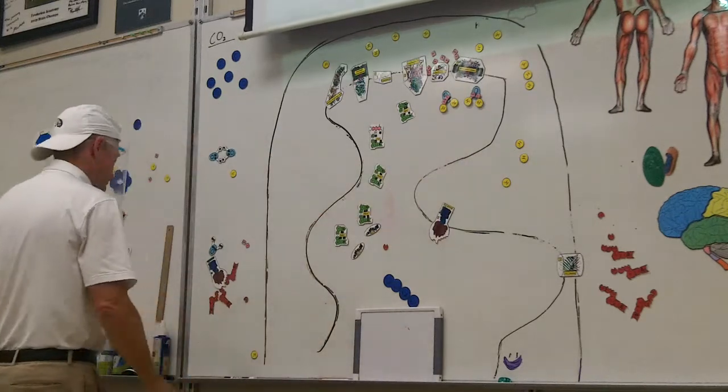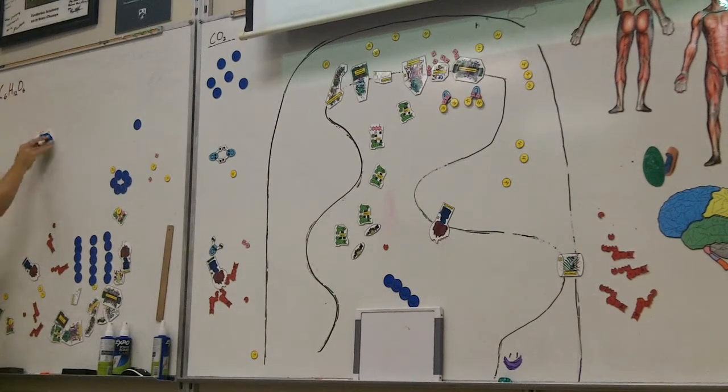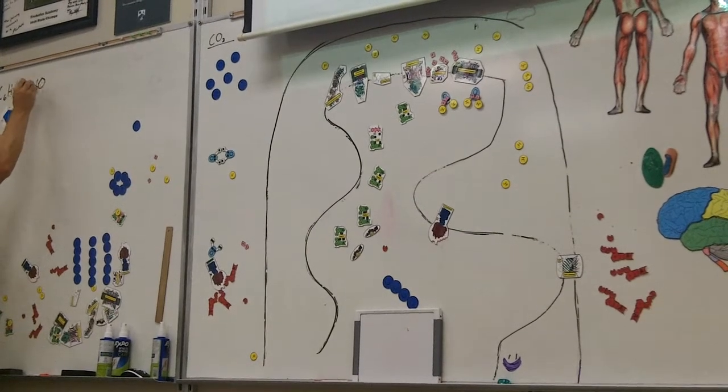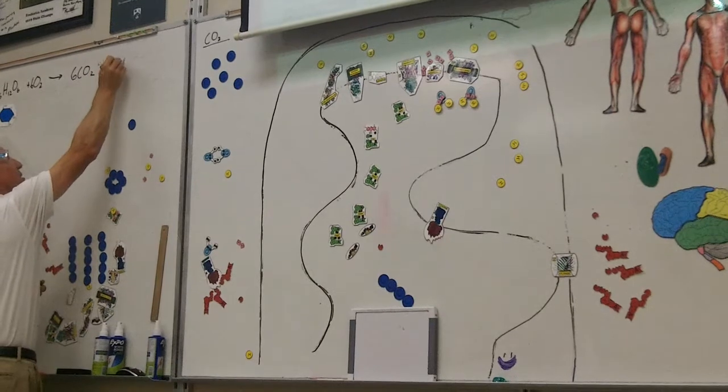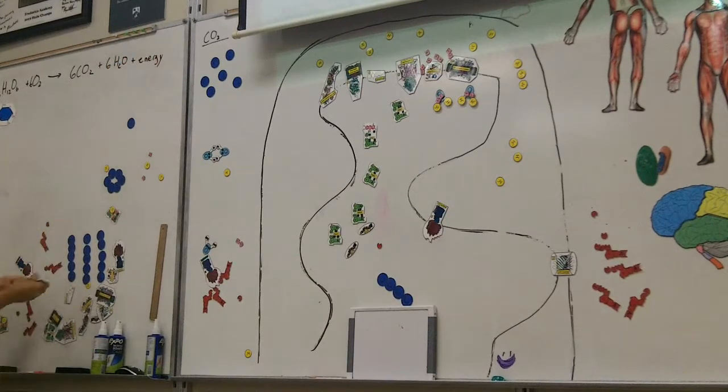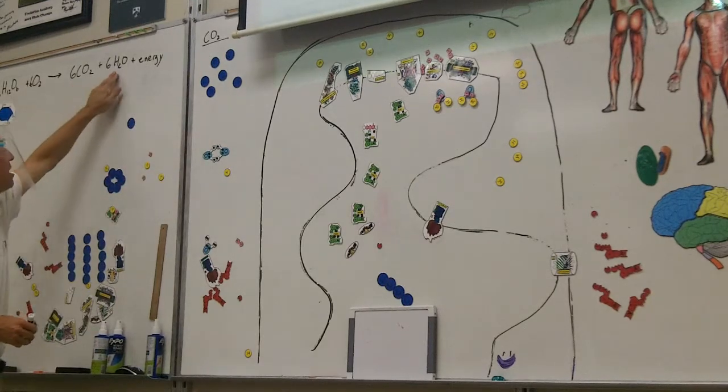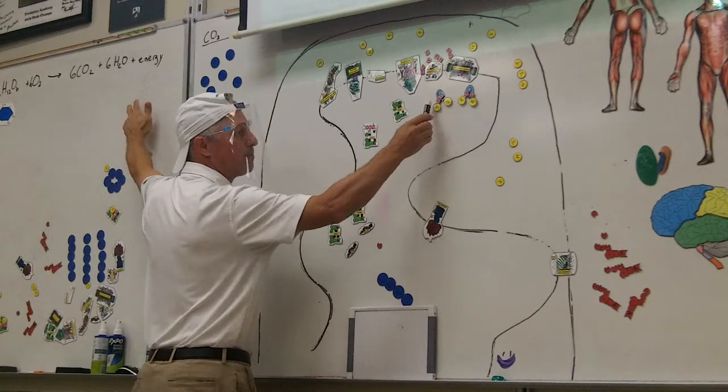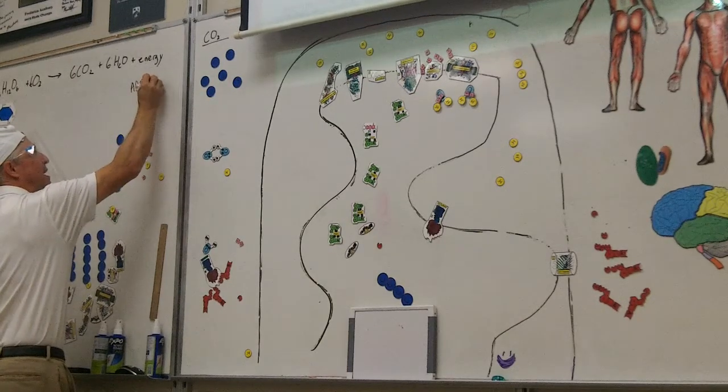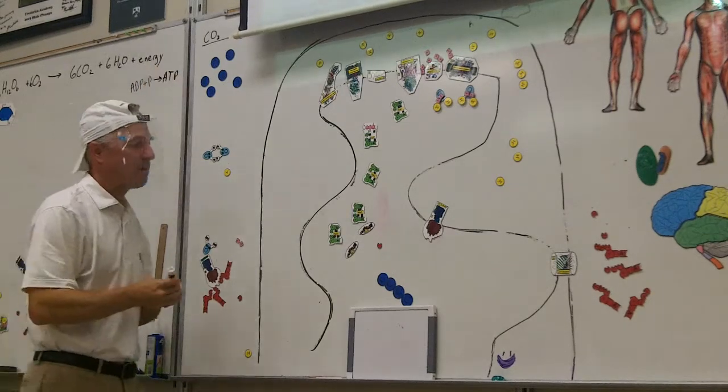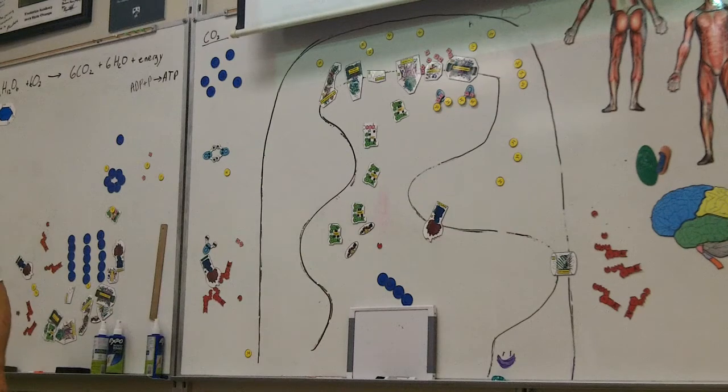So if you look at the formula for respiration, glucose plus oxygen, 6 O2, yields 6 CO2 plus 6 H2O plus energy. The CO2 was breathed out here. The H2O is formed right there. And the energy is used to turn ADP and P into ATP. And there's the ATP that's formed. Does this make any sense?